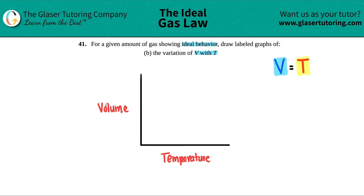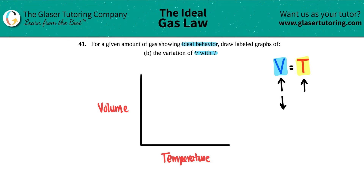If volume on one side increases, what's going to happen to the other side of the equal sign? Since they equal each other, temperature has to go up as well. And if volume decreases, temperature decreases too. Because we're seeing the same thing happen between both of them.